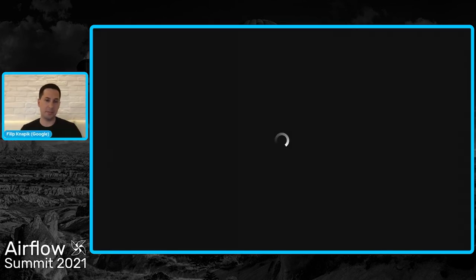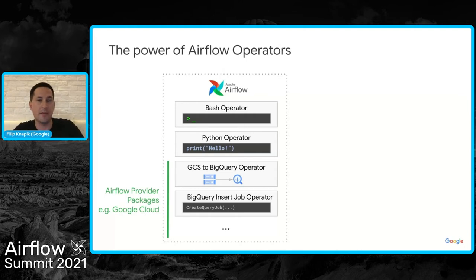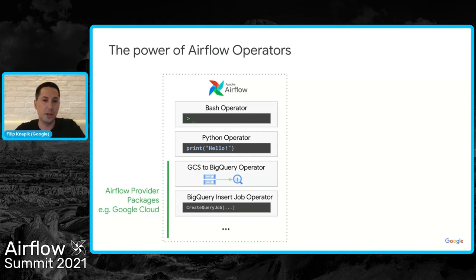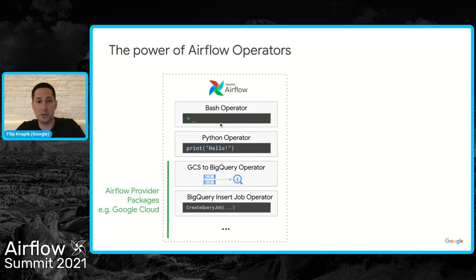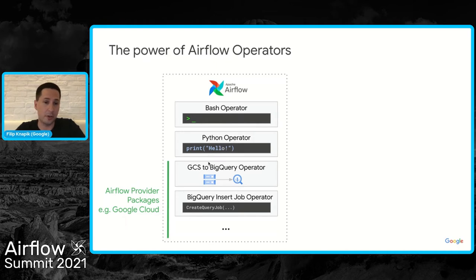Let me spend a couple of minutes talking about integrations and different approaches you can have from within your Airflow DAGs. The big power — arguably the killer feature — is that Airflow has so many quality operators to interact with different products. Integrating with products in different clouds and from different providers is made seamless thanks to community contributions. To start, look for an existing operator for the system you're trying to connect. There are built-in operators like Bash operator or Python operator to execute jobs within the worker itself.